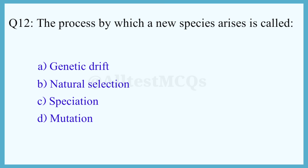Q12. The process by which a new species arises is called? The correct answer is option C: Speciation.